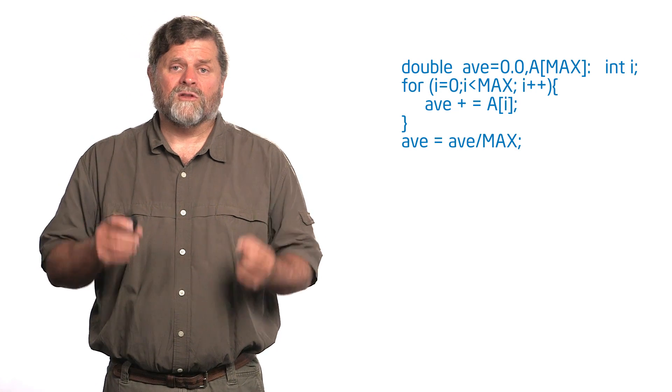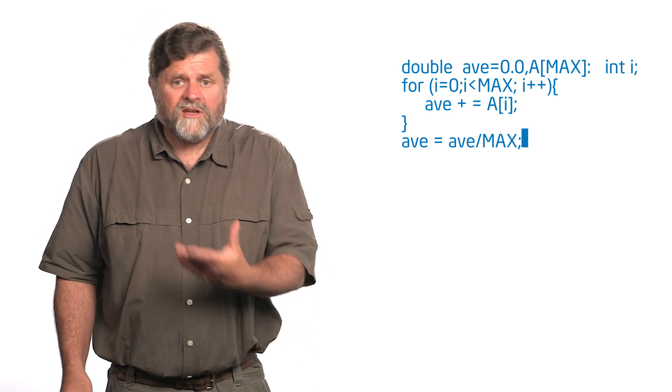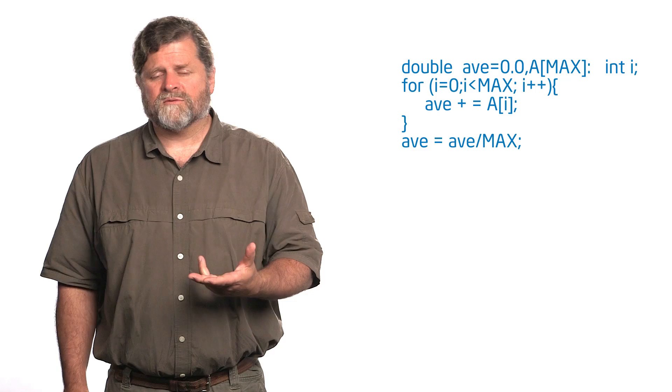Now the problem is this is a loop carry dependency, right? Think about that av value in this code. Its value in iteration n depends on the values from the previous n minus 1 iterations. It's a fundamental loop carry dependency. I'm hosed. I'm dead. I can't parallelize this loop.